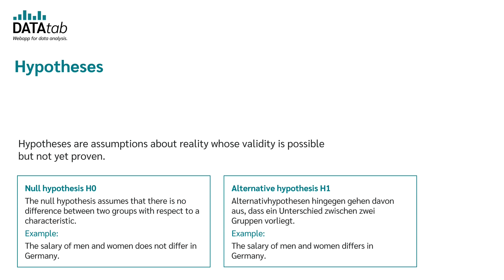In order to calculate the independent t-test, the hypotheses must first be defined from the research question. Hypotheses are assumptions about reality whose validity is possible but not yet proven. There are always two hypotheses: the null hypothesis and the alternative hypothesis. The null hypothesis assumes that there is no difference between two groups — for example, the salary of men and women does not differ. The alternative hypothesis assumes that there is a difference — for example, the salary of men and women does differ.